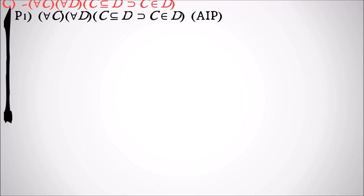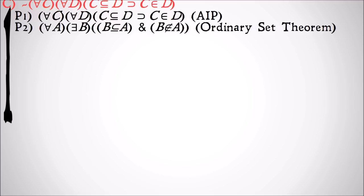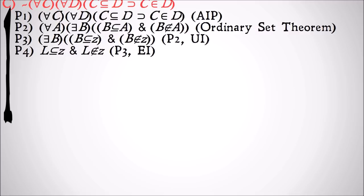Next up we're trying to show that it's not the case that for all C and all D, C is a subclass of D implies that C is a member of D. So there are some situations in which being a member of something doesn't make you a subclass of it. We have once again an assumed indirect proof. Then we're going to use our useful ordinary set theorem to show that for all A there exists a B such that B is a subclass of A and B is not a member of A.